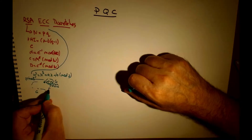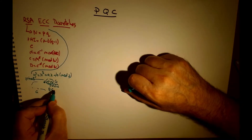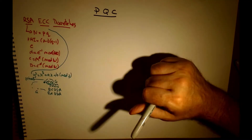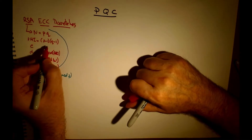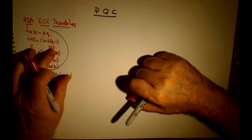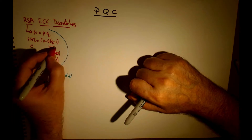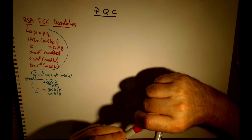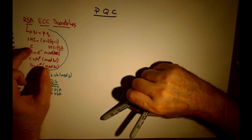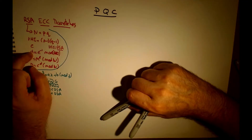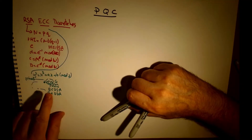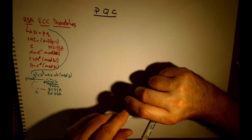We can sign using methods such as ECDSA or EdDSA. We can create a digital signature with DSS or DSA. We take the decryption key and sign a message with that to give us a signature, and then we use the public key to be able to prove the signature.